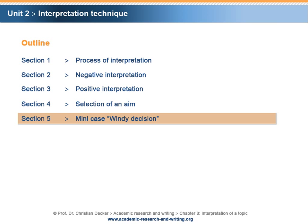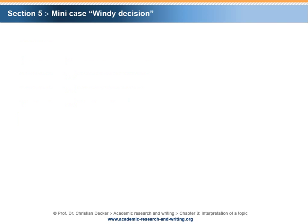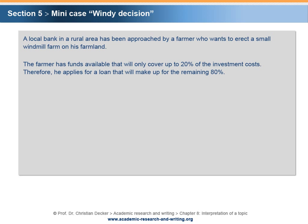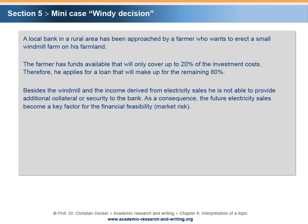Section 5 – Mini Case: Windy Decision. In the following, there is a description of our sample case entitled Windy Decision. A local bank in a rural area has been approached by a farmer who wants to erect a small windmill farm on his farmland. The farmer has funds available that will only cover up to 20% of the investment costs. Therefore, he applies for a loan that will make up for the remaining 80%. Besides the windmill and the income derived from electricity sales, he is not able to provide additional collateral or security to the bank.